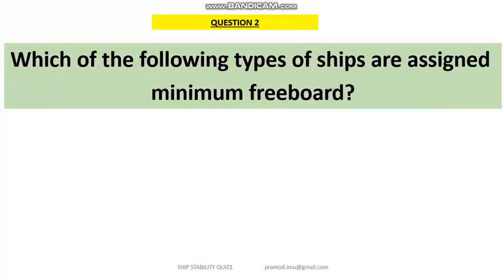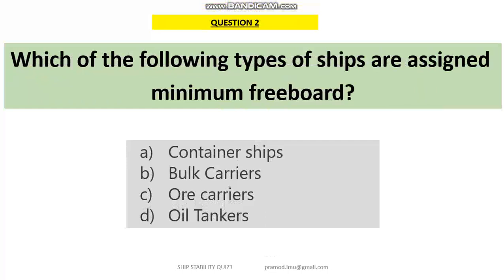In question number 2: which of the following types of ships are assigned minimum freeboard? We all know that the family of tankers, classified as Type A freeboard vessels, have minimum freeboard compared to all ships.